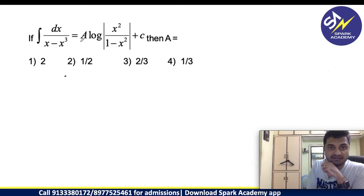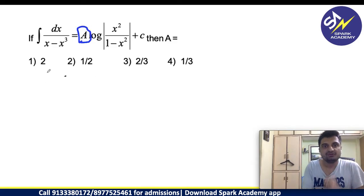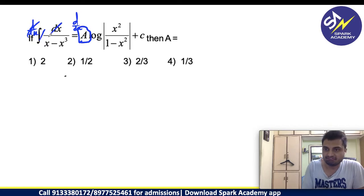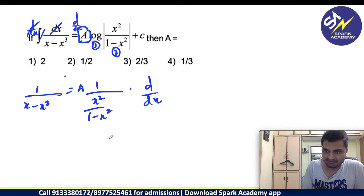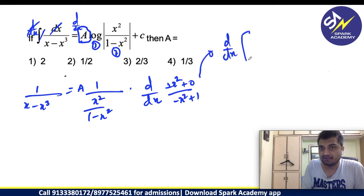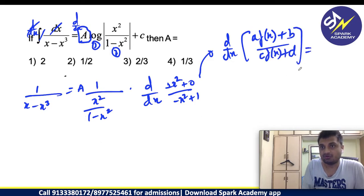Let us get back to the problems which we were discussing. Now, again, we are asked to find out A value and we are given a function. What is the first step we need to do? We need to differentiate on both sides. You need to differentiate. Derivative and integral will get cancelled. 1 by x minus x cube will be what? A times derivative of log is 1 by that thing into internal differentiation because inside part is second part. Mod does not matter in log because log will obviously take only positive values. This I can write it as x square by minus x square plus 1.